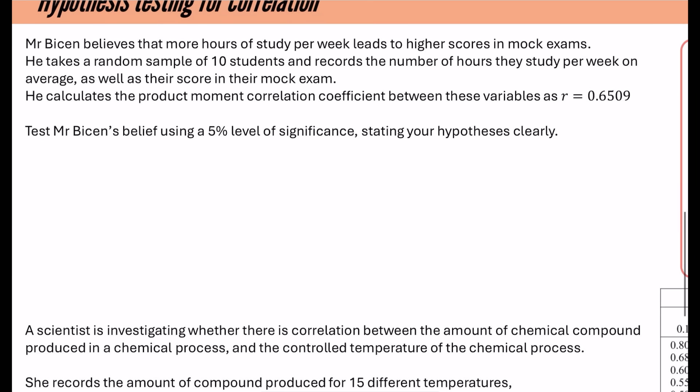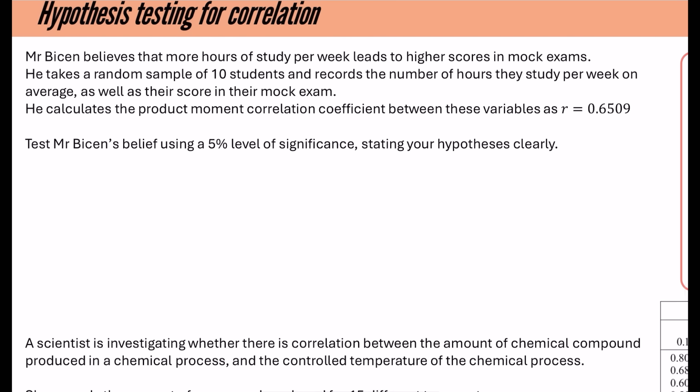So, Mr. Bison believes that more hours of study per week leads to higher scores in mock exams. He takes a random sample of 10 students and records the number of hours they study per week on average, as well as their score in their mock exam. He calculates the product moment correlation coefficient between these variables as R equals 0.6509. Test Mr. Bison's belief using a 5% level of significance stating our hypotheses clearly. So alpha is 0.05. The null hypothesis is that there is no correlation, rho equals 0. The alternative hypothesis is what Mr. Bison thinks. I believe that more hours of study lead to higher scores in mock exams. That means that I believe there is a positive correlation. So, I believe that rho is greater than 0.